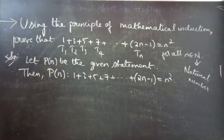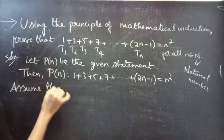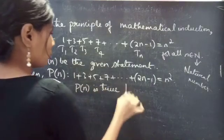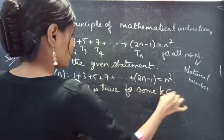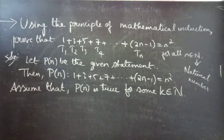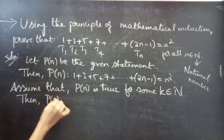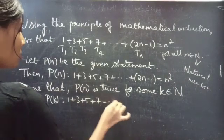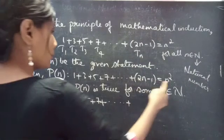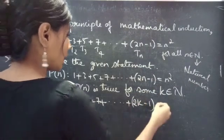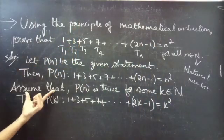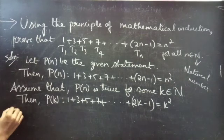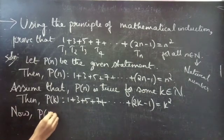Now assume that P of n is true for some k which belongs to natural numbers. Then P of k is such that 1 plus 3 plus 5 plus 7 plus so on plus the kth term — simply replace n by k — then you will get the sum of k terms equals to k squared. We have assumed that this is true, and since this is true, using this we can now show that P of k plus 1 is true.